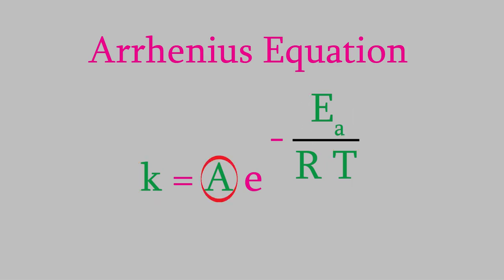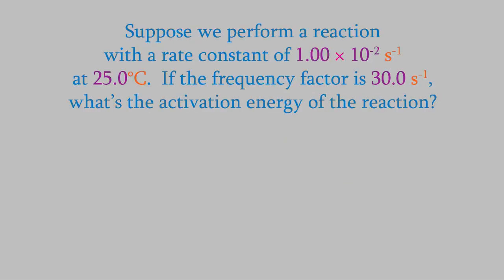Anyway, back to this equation. This is called the Arrhenius equation, and the important thing to notice about it is that it shows us that the rate constant is connected to the temperature and the activation energy. The frequency factor, which is A in this equation, is different for every chemical reaction, and it's usually something that we have to do experiments in order to determine. Let's try using this equation. Suppose we perform a reaction at 25.0 degrees C, in which the rate constant is 1.00 times 10 to the minus 2 seconds to the minus 1. The frequency factor is 30.0 seconds to the minus 1. What's the activation energy for this reaction? We'll use the Arrhenius equation we just talked about. We're looking for the activation energy, so we need to plug in everything else in this equation. We know what K, A, R, and T are.